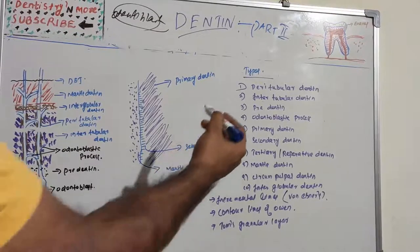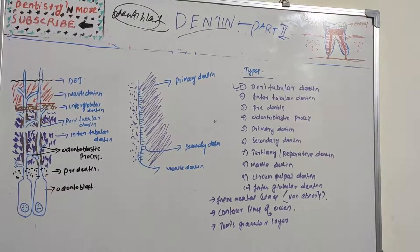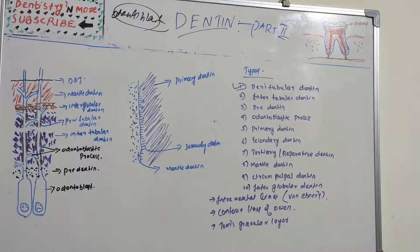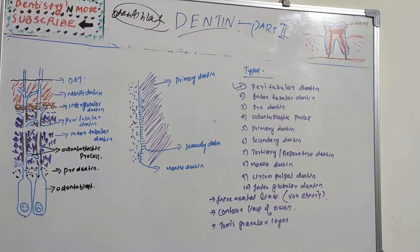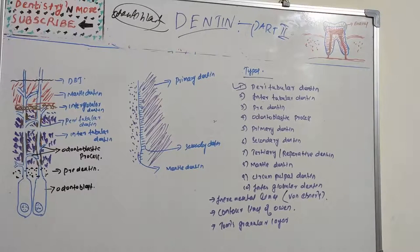Let's start with peritubular dentine. These questions are very important because they are commonly asked as short notes in university exams. So we have peritubular dentine, intertubular, pre-dentine, odontoblastic process, primary dentine, secondary dentine, tertiary dentine, mantle dentine, circumpulpal dentine, interglobular dentine, contour lines of Owen, von Ebner's lines, and Tomes' granular layer. Always try to understand the concept with a picture in your mind — it will be easy to reproduce in your answer sheets.